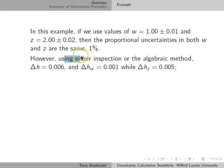However, using either inspection or the algebraic method, the uncertainty in h is about 0.006, and delta h w is 0.001 while delta h z is 0.005.